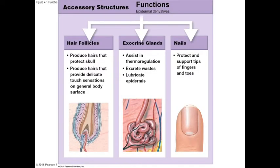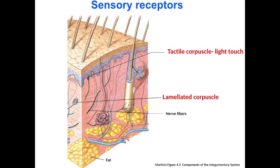The integumentary system also includes accessory structures important for skin function, including epidermal derivatives such as hair, glands, and nails. Sensory receptors are also included. The skin covering the surface of the body provides an interface with the immediate surroundings, informing you of things near or against your skin. There are receptors detecting temperature, pain, and other types of touch, which will be revisited when discussing the somatic sensory division of the nervous system.